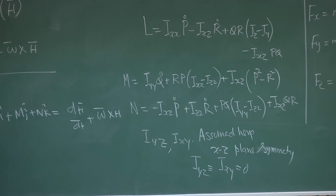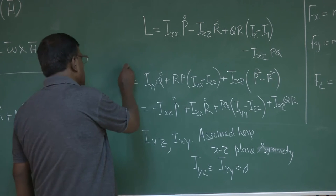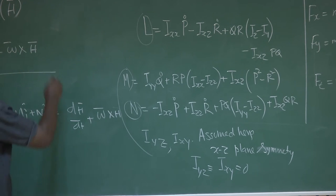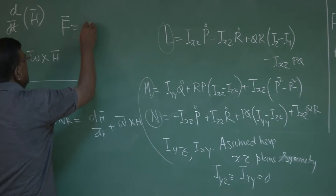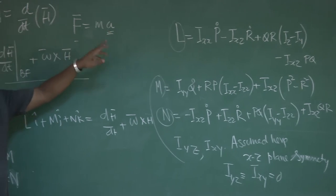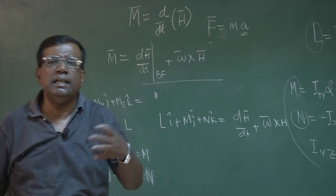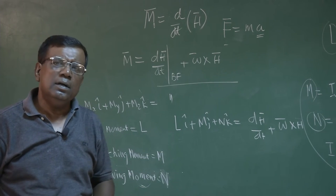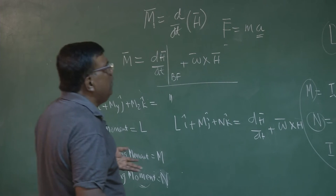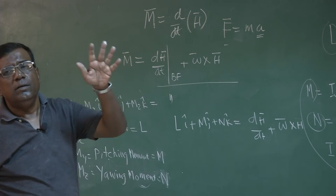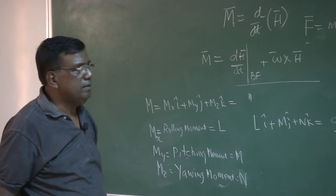But we have not addressed this question: what are these fx, fy, fz or the moments L, M, N? Because whatever big expression we write — if F equals ma — our aim is: if I know F and the inertia properties, I can find acceleration a. If I know a, I can integrate to get velocity; if I know velocity, I can integrate to get position. So I can describe complete translational motion. Similarly, moment equals I·alpha, so I can find rotational behavior. That is the purpose.